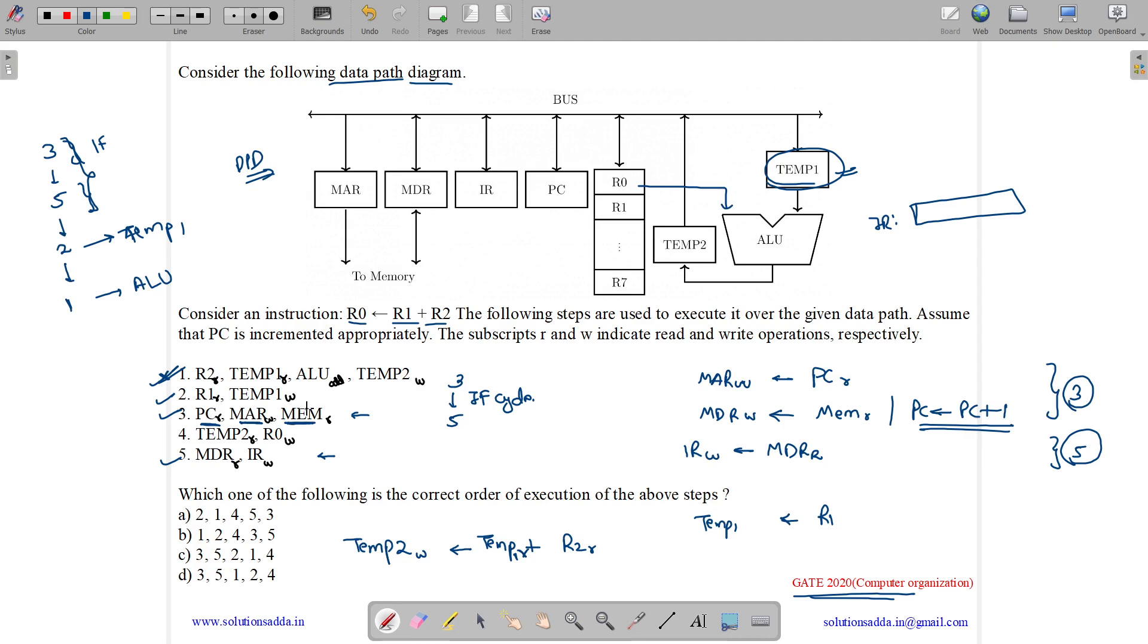And now what we have? Now we have our result in temp2. So we will read the content of temp2 and store it in our register R0. Similarly here you can see temp2 is stored to a bus. From here it will come to R0. So what we have? We have temp2 value stored in our register R0. So now after this we will have our instruction 4.